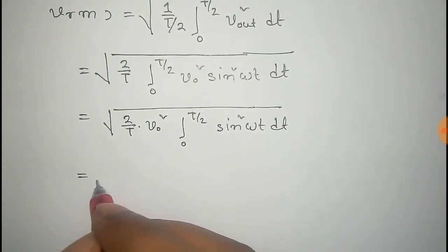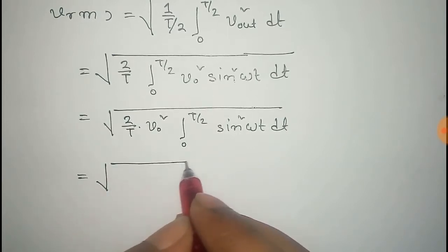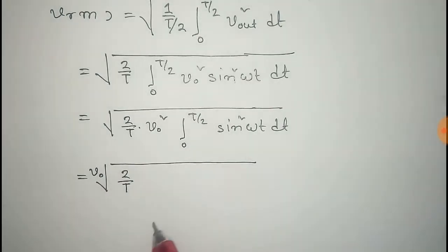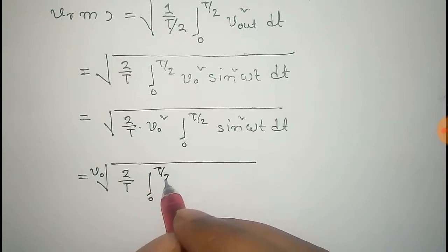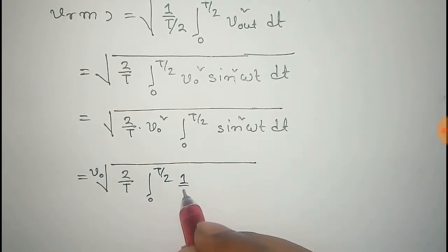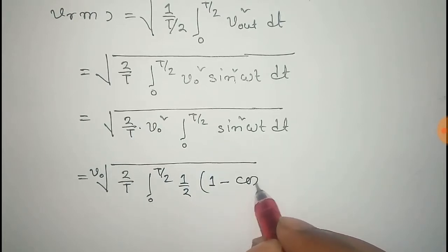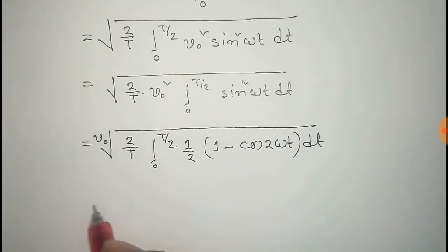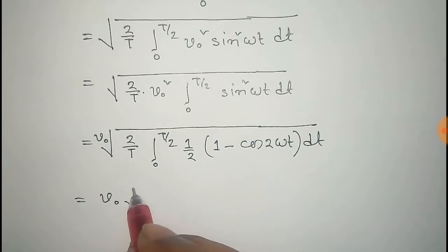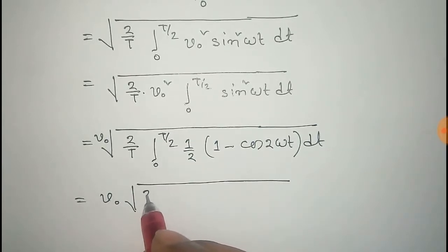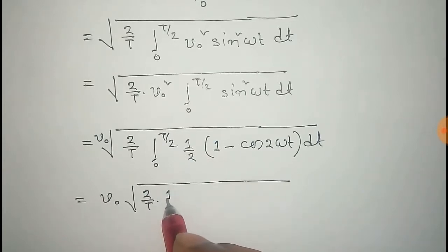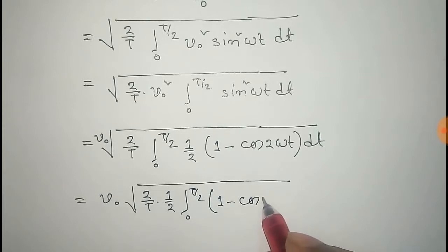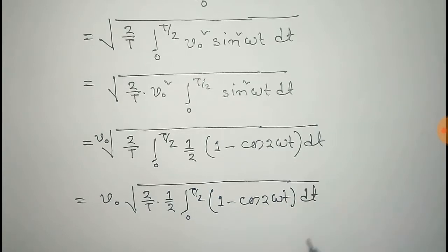We can write sin²(ωt) as half of (1 − cos(2ωt)). So that equals V₀ times square root of (2/T) times (1/2) times the integral from 0 to T/2 of (1 − cos(2ωt)) dt. Taking the half out of the integral gives V₀ times square root of (1/T) times the integral from 0 to T/2 of (1 − cos(2ωt)) dt.